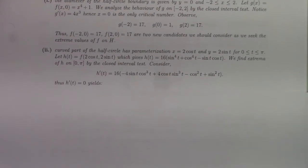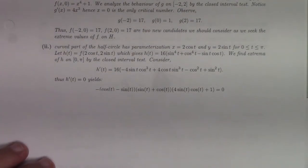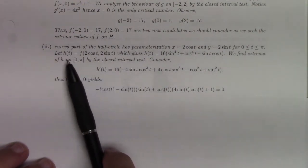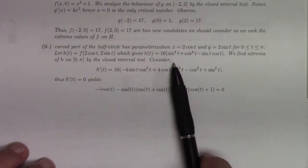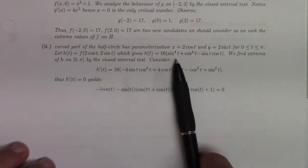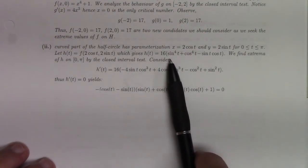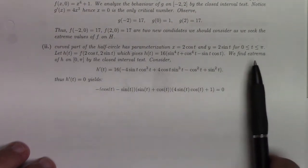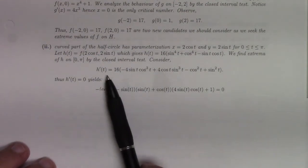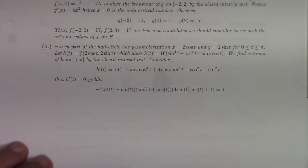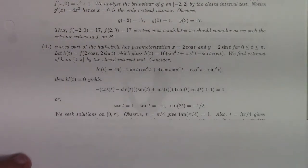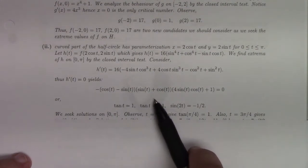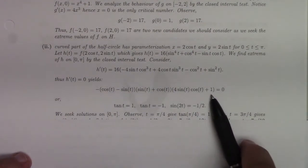Then, the half circle. I can parameterize with 2 cosine t, 2 sine t. If we look at f of the parameterization, call that h, it gives us this pretty ugly expression: 16 sine to the fourth plus cosine to the fourth minus sine cosine. Again we can use the closed interval test to calculate the derivative, set the derivative equal to zero. We either need cosine minus sine equal to zero, or sine plus cosine equal to zero, or this equal to zero, so that can be converted into 2 sine 2t.